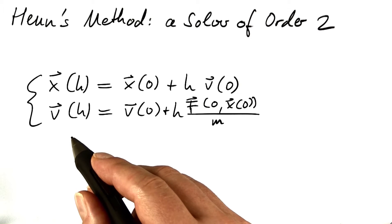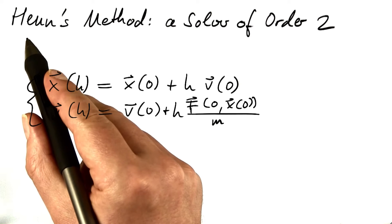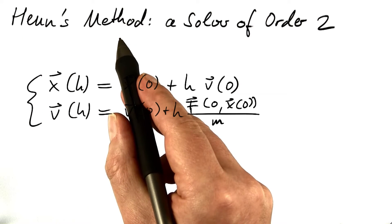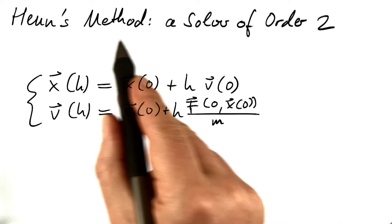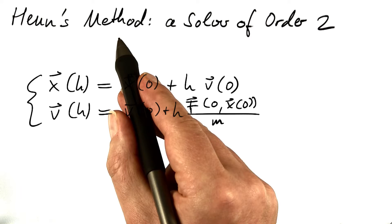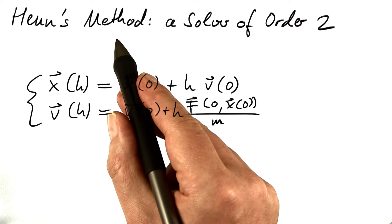So now we want to actually look at a solver of order 2. The method invented by Karel Heun, Heun's method, it also goes under the name of improved Euler's method and it also is one example for a simple Runge-Kutta method, in case you have heard that term.